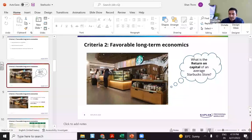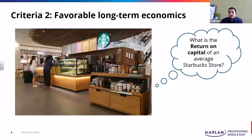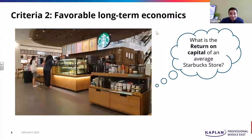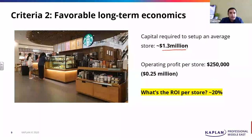Do you know what the average return on capital is? When you set up a store, how much do you think would be the cost to set up an average Starbucks store? There are answers of 3 million, 2 million, 500K, 5 million. On an average, this company requires around 1.3 million to set up an average store. The average Starbucks store costs around $1.3 million.